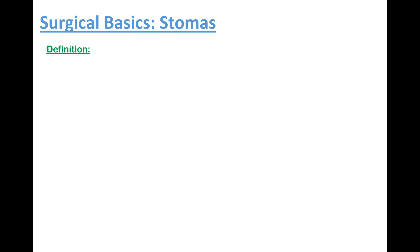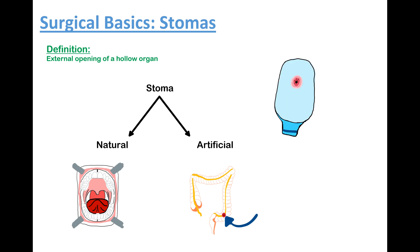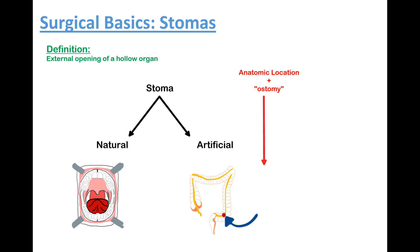So what is a stoma? It's essentially just an external opening of a hollow organ, and as a result they can either be natural — for example our mouth — or artificial, for example a surgical opening in our bowel diverting the fecal stream to the anterior abdominal wall into a plastic stoma bag. We describe stomas with a very simple formula: first we describe the stoma's anatomic location using a prefix, then we add on an ending 'ostomy'. For example, if we had a stoma in our colon we would just call it a colostomy.